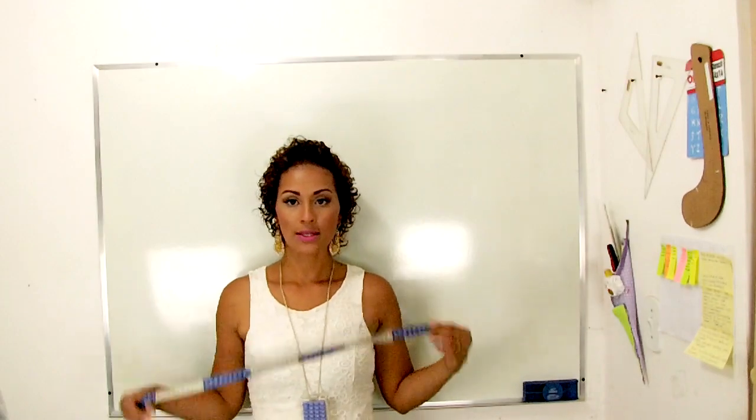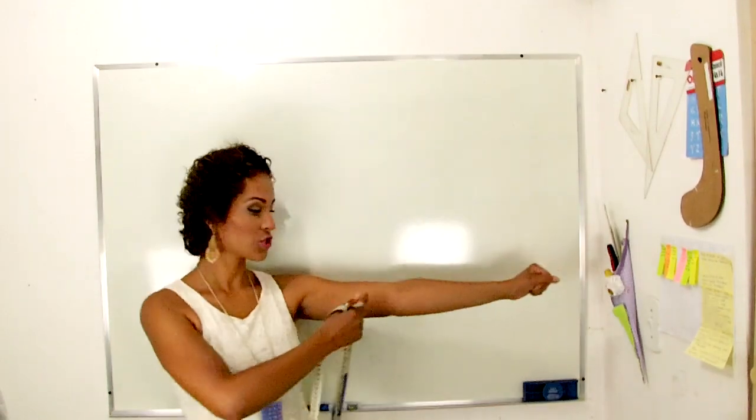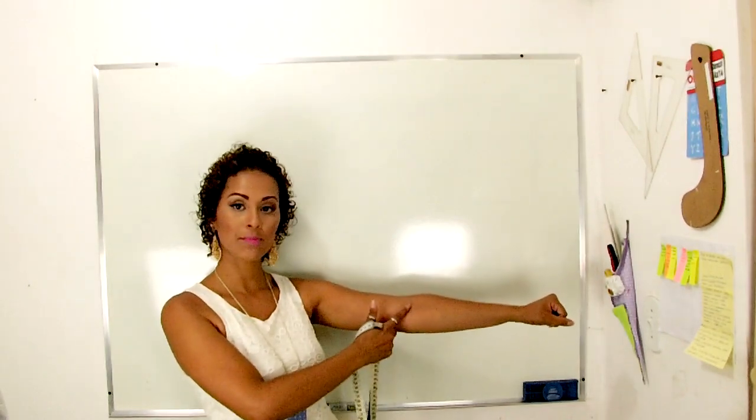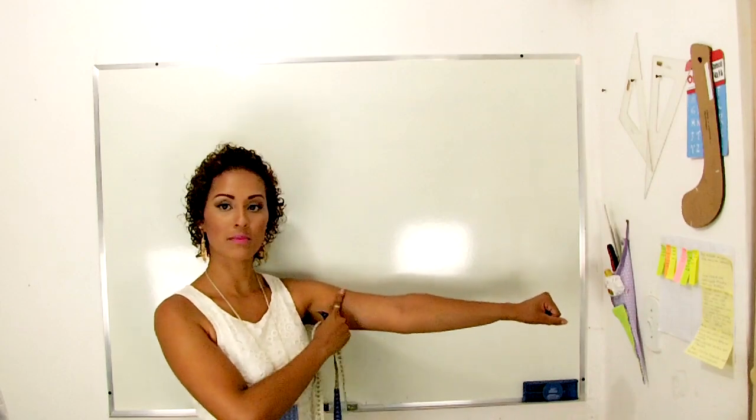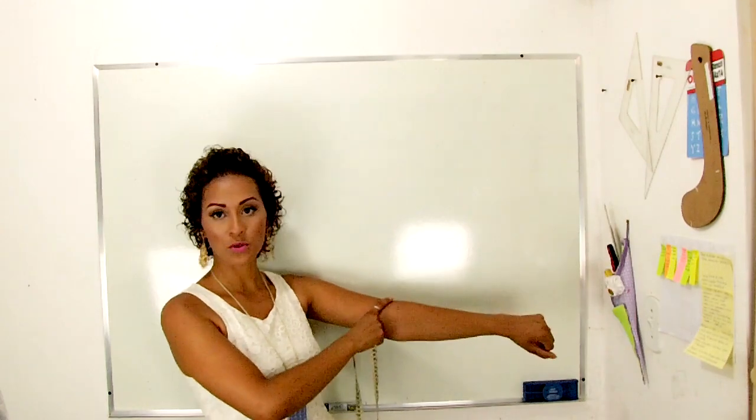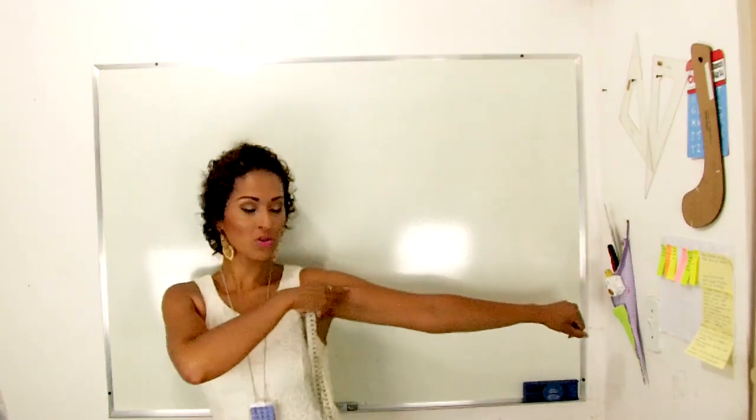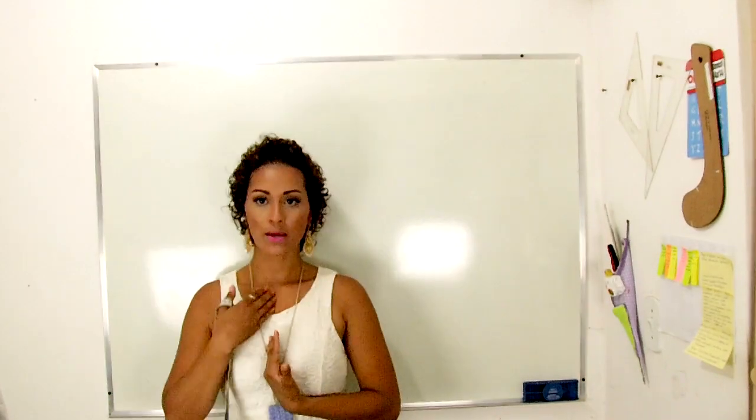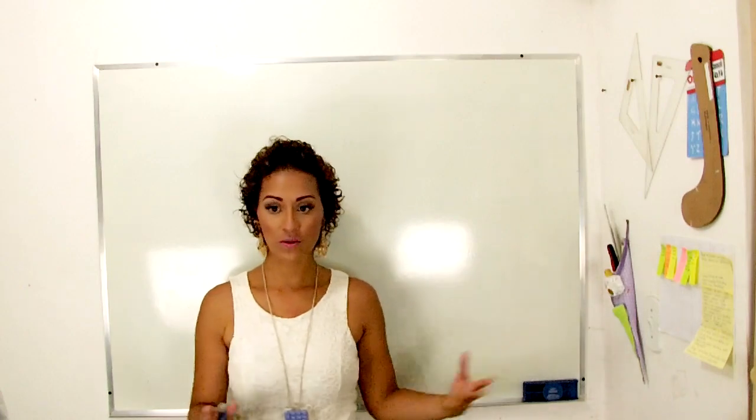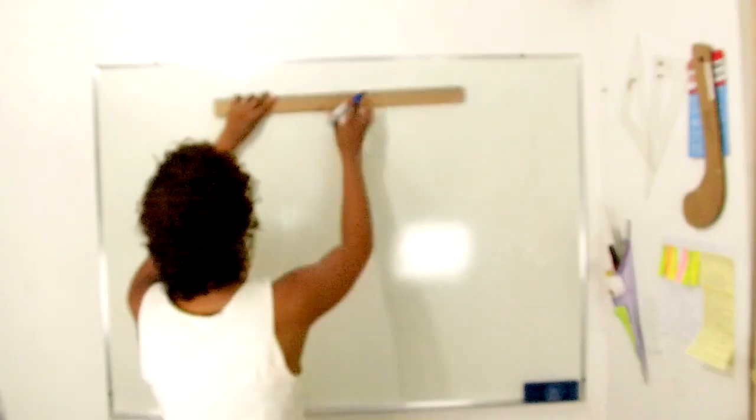Então eu vou tirar as medidas do meu corpo, eu aconselho que você faça esse modelo um ou dois manequins acima do seu, para que a peça fique bem larguinha e não fique muito justa, porque não é a intenção fazer uma peça muito justa. Então, para começar a modelagem desse modelo de saída de praia, eu medi daqui, que vai ser a altura, o comprimento da minha manga, que deu 41cm.